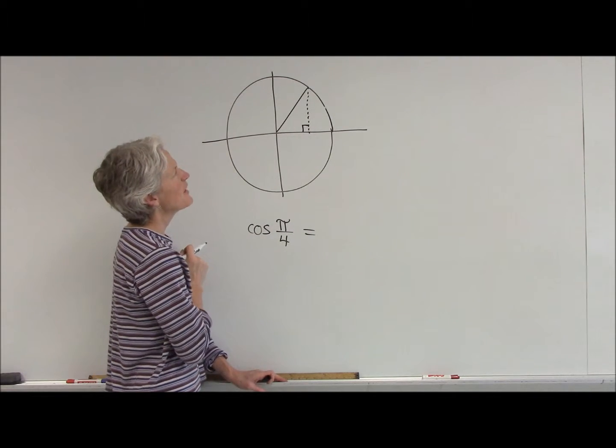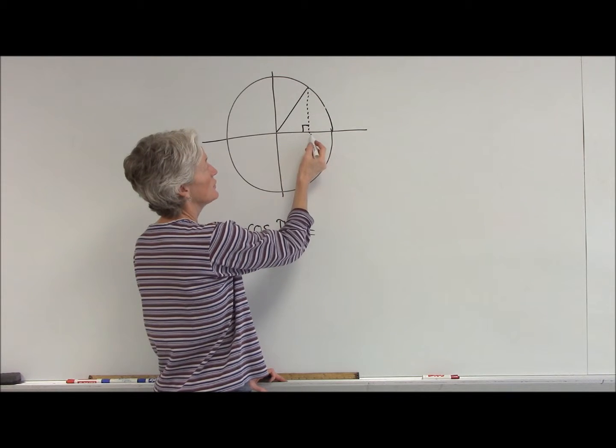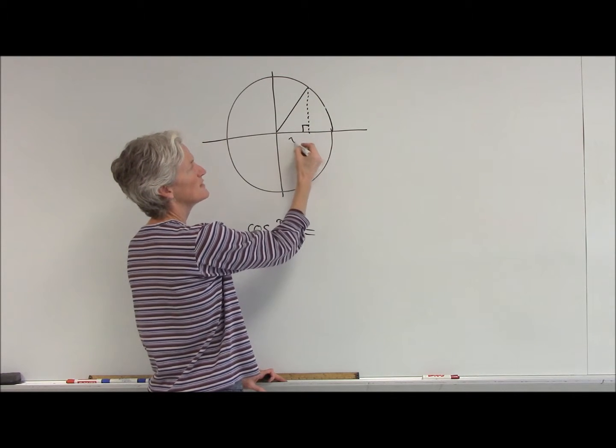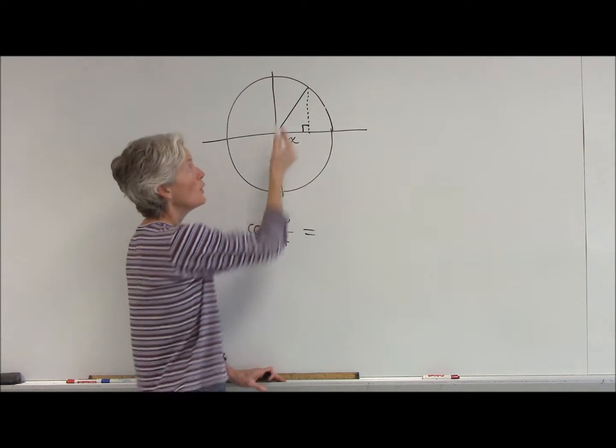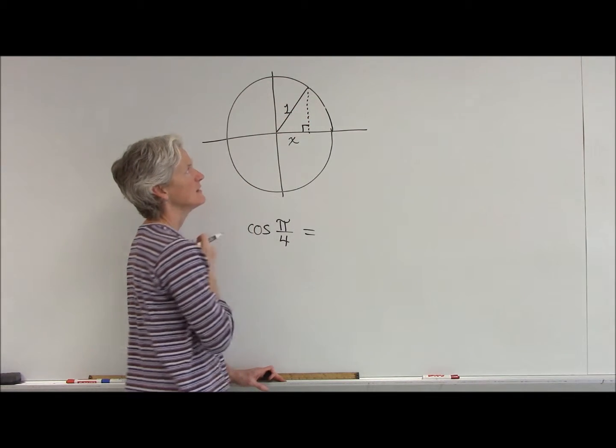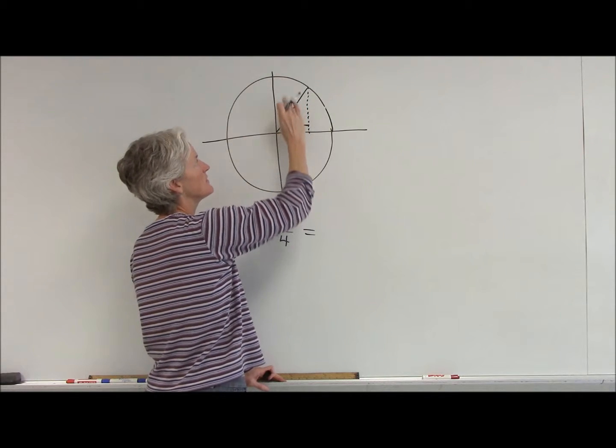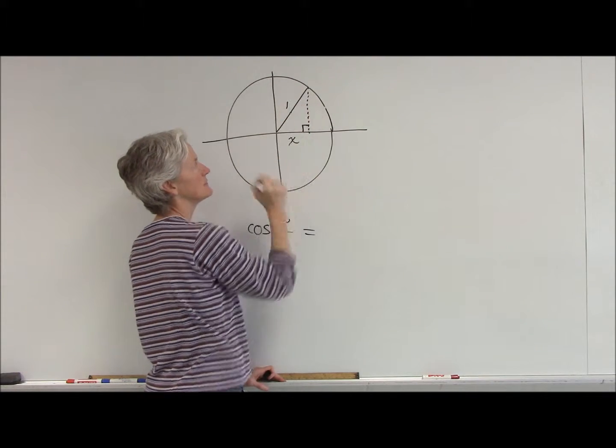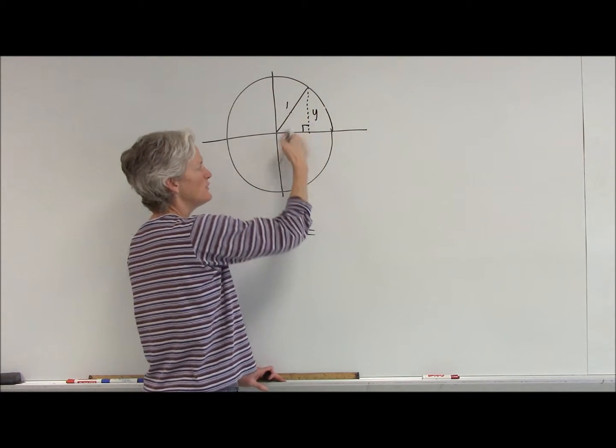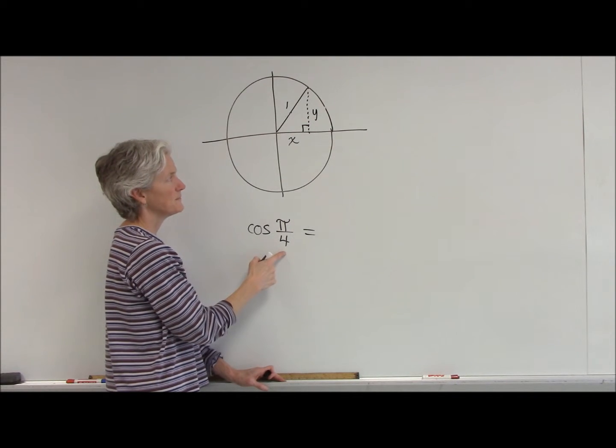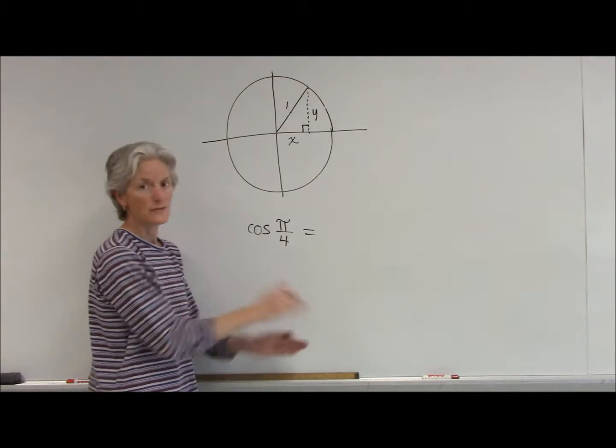So, let's envision what this looks like on our unit circle. Cosine is my x value over my hypotenuse, and let's just call that 1. Say it's a unit circle. So that's 45 degrees, or pi over 4 radians.